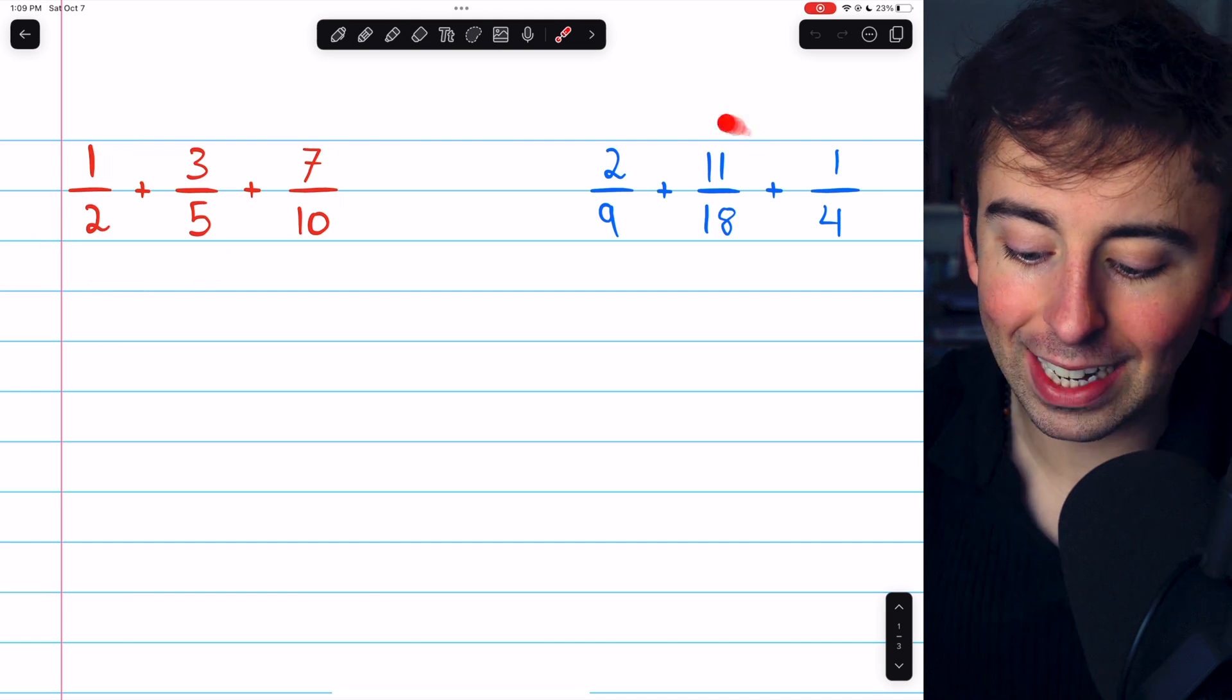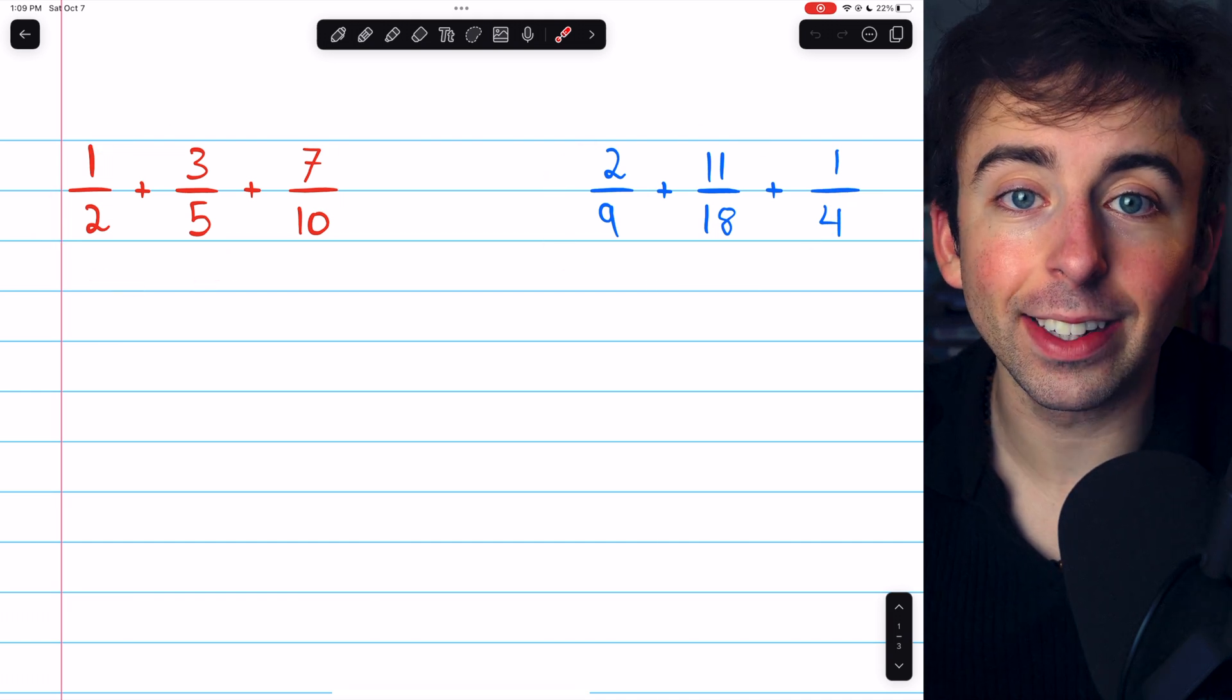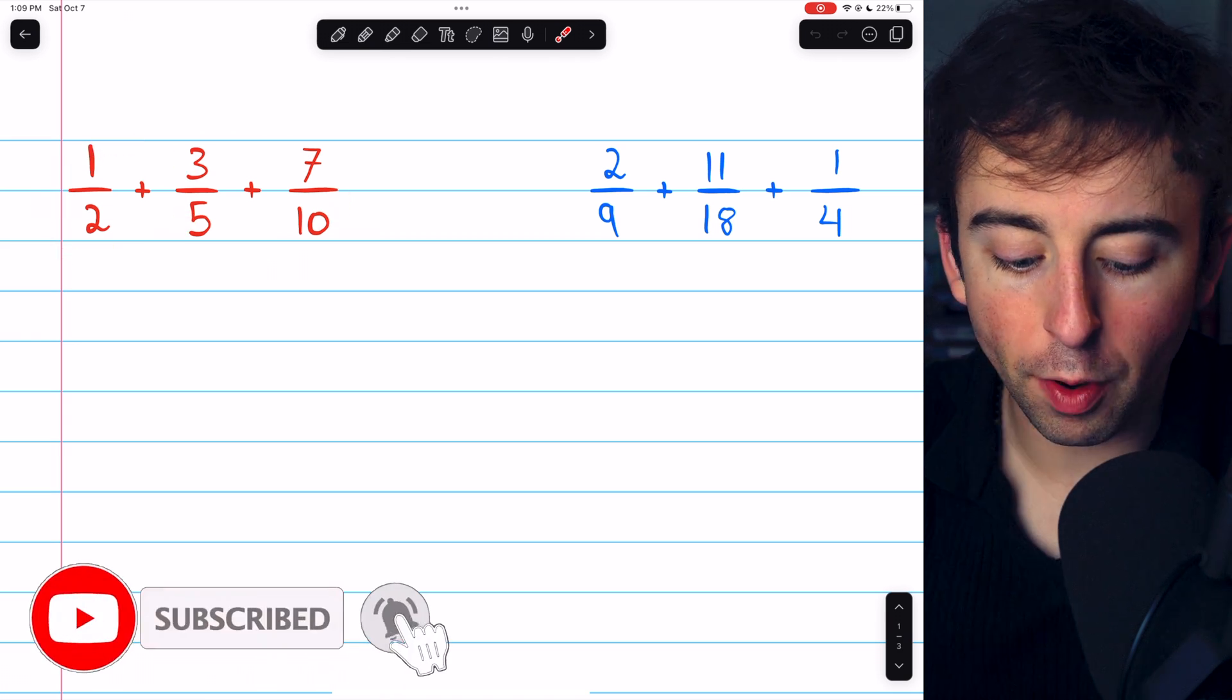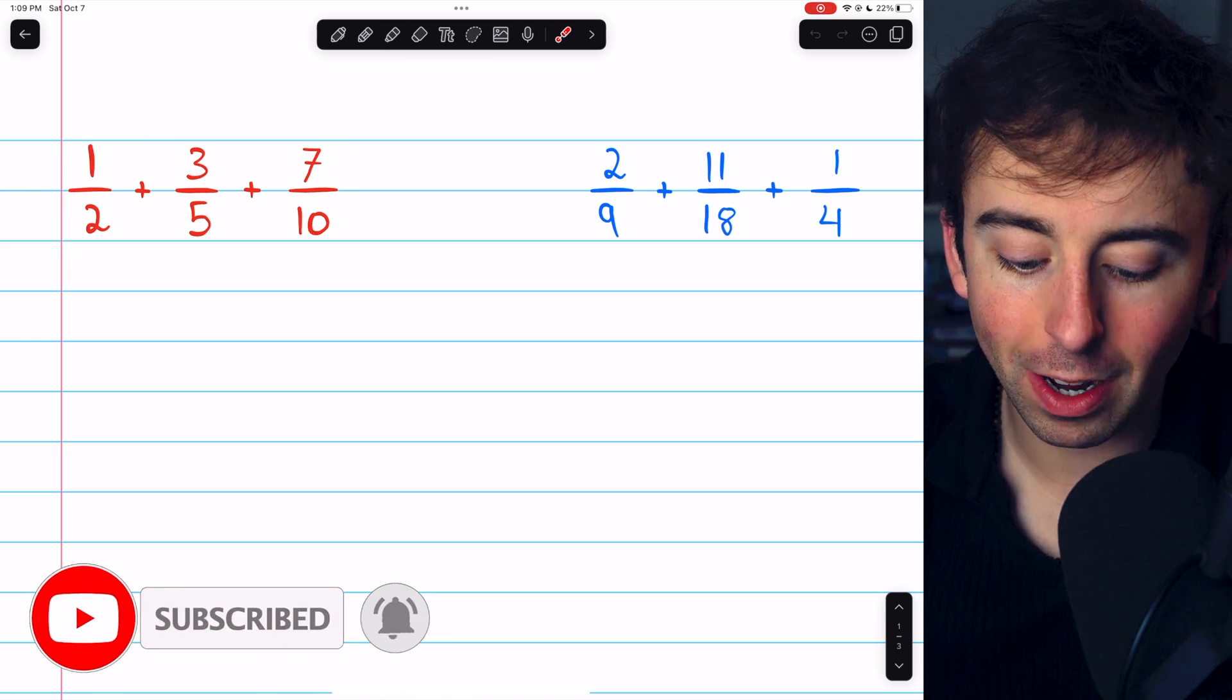Let's do these two examples of adding three fractions with unlike denominators. In the first example, we'll be able to make the first two fractions have the same denominator as the third.